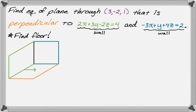And then the second plane, negative 3x plus y plus 4z, has a normal vector of negative 3, 1, 4. I could put that anywhere on that wall, as long as it's perpendicular to it. I'm going to choose to put it on the floor.